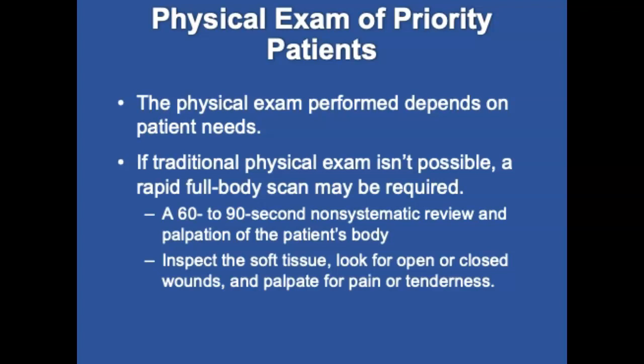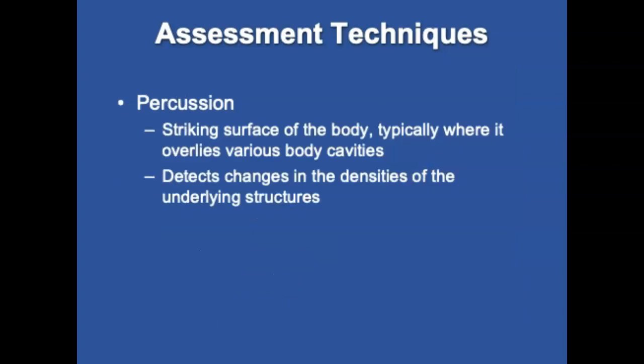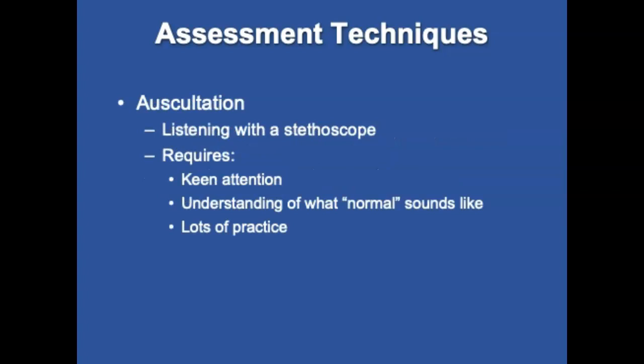Assessment techniques include inspection — looking at the patient — palpation — touching for the purpose of obtaining information — and percussion. Percussion entails gently striking the surface of the body, typically where it overlies various cavities, to detect changes in the density of underlying structures. Normal lung produces medium-to-loud, low-pitched sounds; muscle and bone produces soft, high-pitched sounds; hollow organs are loud, high-pitched, and tympanic. This requires a lot of practice. Auscultation involves listening with a stethoscope and requires keen attention, thorough understanding of what normal sounds like, and extensive practice.